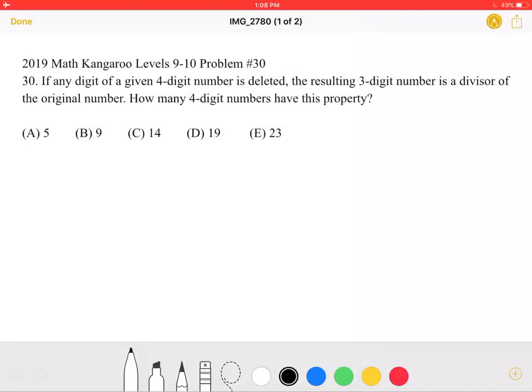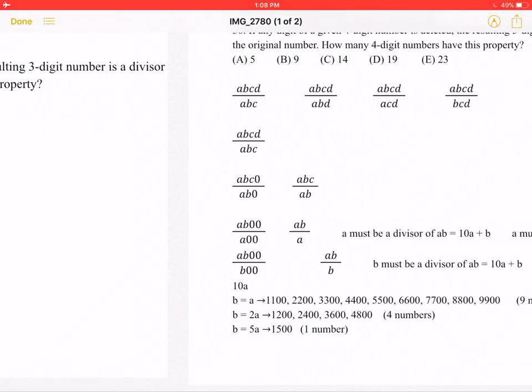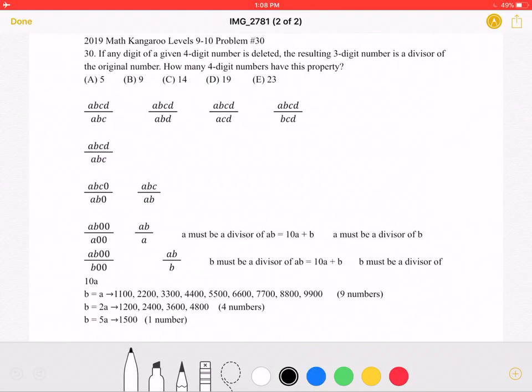This is the problem as it originally appeared on the test, and here is where we will be doing the solution. To start, if we have a four-digit number ABCD, the problem states that if we delete one of the digits, the resulting three-digit number is a divisor of the original number.